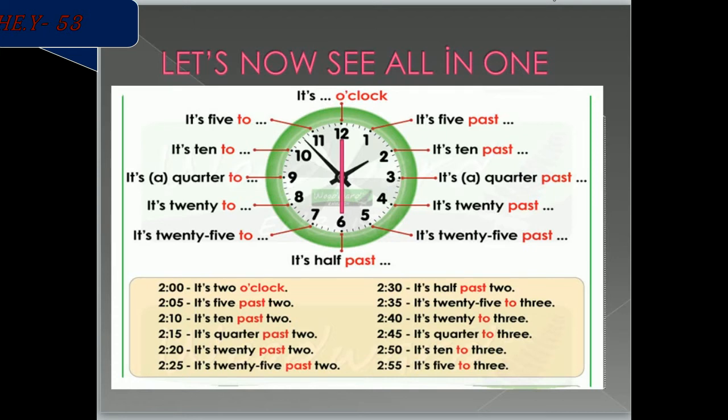Let's now see all in one. Right side of the clock is expressed with past, while the left side is with to. As you see on the clock, o'clock is at 12, quarter is at 15 minutes, half at 30 minutes.